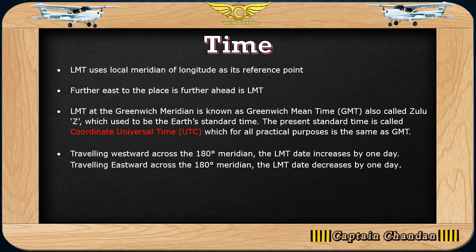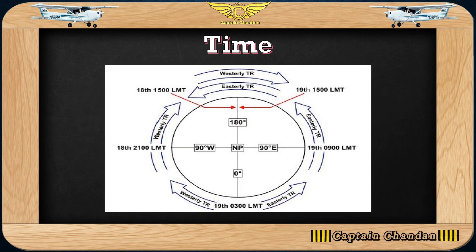This is very important if you are going to solve numerical problems. On a westerly track, if you cross the anti-meridian, the date increases by one day. If your track is easterly and you cross the anti-meridian, the date decreases by one day. You can use the picture on screen as a reference and remember it.